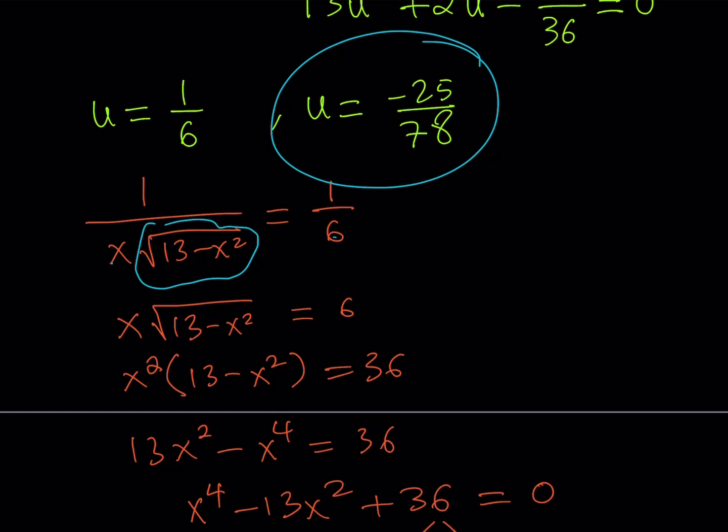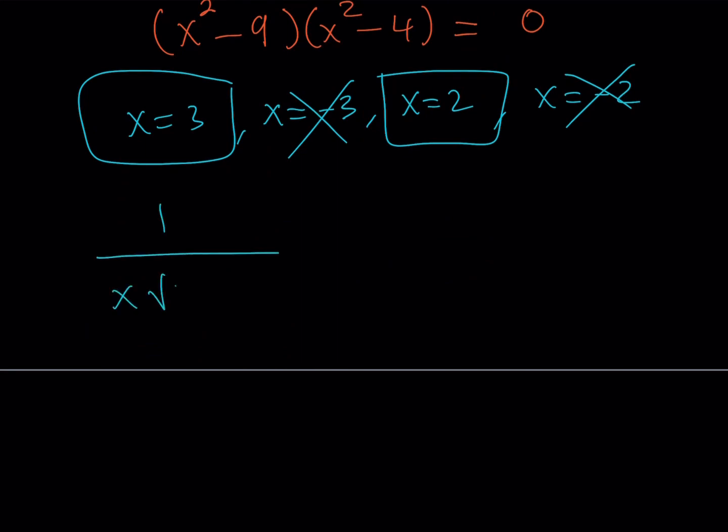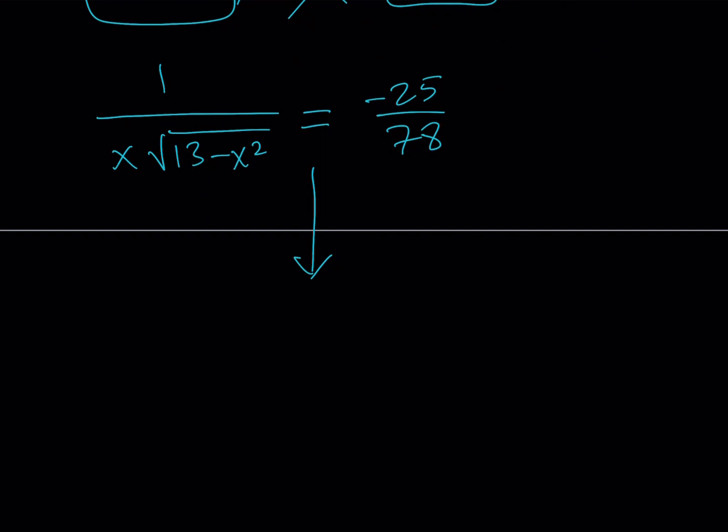Okay. So what are we going to do next? We're going to go ahead and set this 1 over x thing to that value. So it's going to look like this. 1 over x times the square root of 13 minus x squared is equal to negative 25 over 78. And then cross multiply, square both sides, you'll get a quartic, but it's actually can be turned into a quadratic because it's called biquadratic, maybe? Something like that. Okay. So it's kind of like x squared squared, and then whichever solutions are valid, and again, I'm going to save you the trouble because this is kind of time consuming, and you don't really need to worry about that. If you want, you can definitely go ahead and do it in your own time.